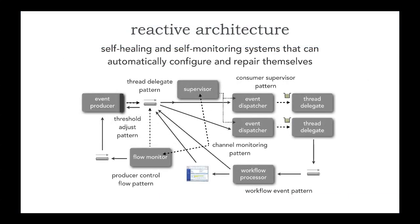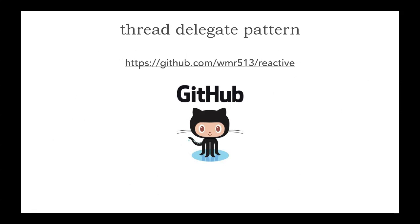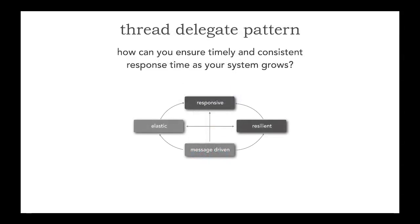In lesson 46, I showed you that these reactive architecture patterns can be used to create self-healing and self-monitoring systems that can automatically repair and configure themselves. In this lesson, we'll focus on the thread delegate pattern — those event producers, dispatchers, and delegates. All of the examples I'm giving, you can find the source code for as well as demos by looking at my GitHub repo at wmr513 slash reactive.